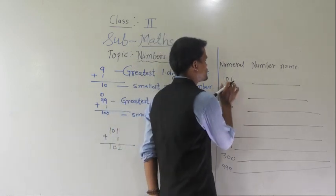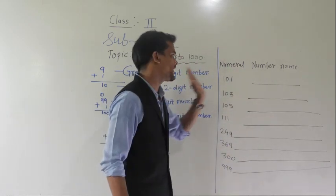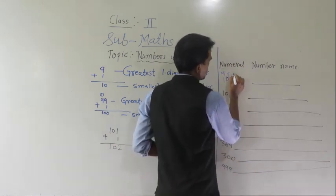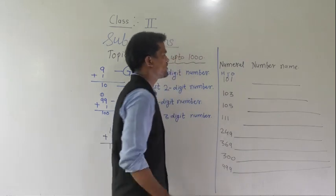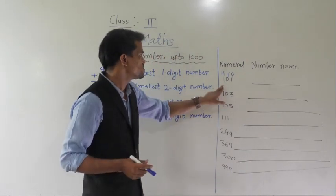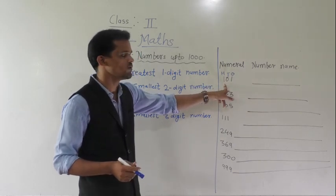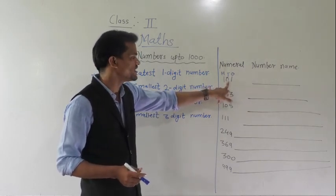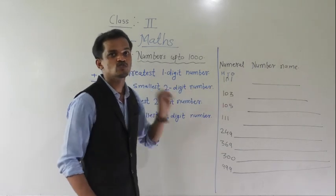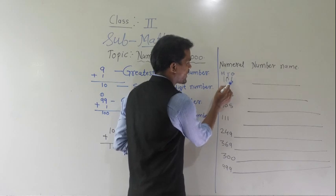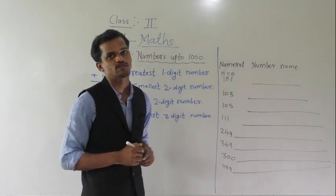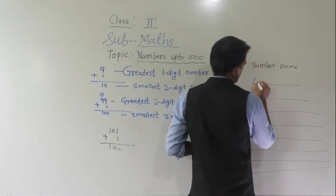See here: 101. The extreme right side is 1 place, then 10 place, and 100 place. How many hundreds in this number? 1 hundred. How many tens? 0. And how many ones? 1. So, read this number as 100 and 1. Write the spelling: one hundred and one.